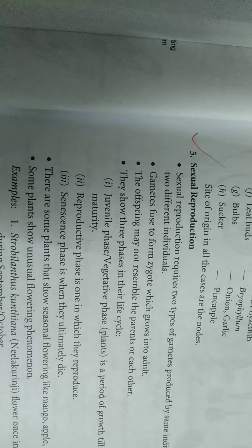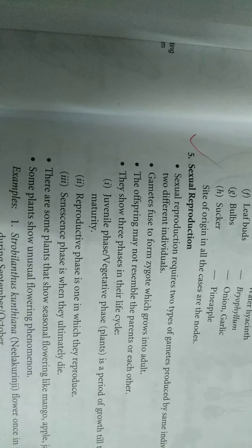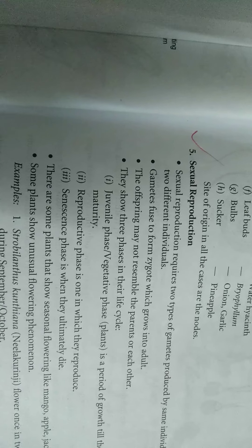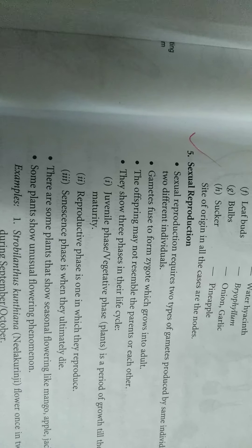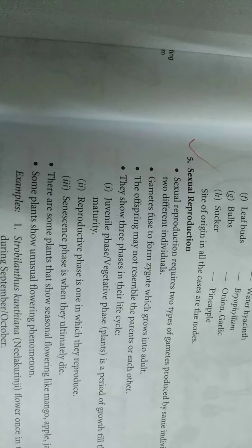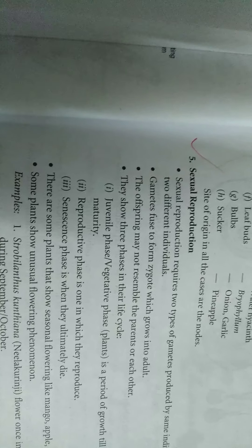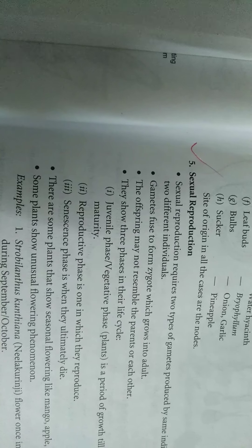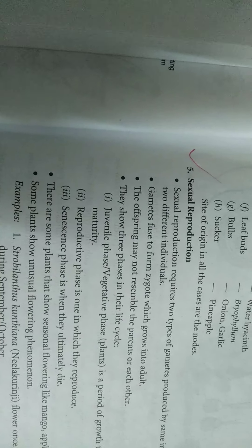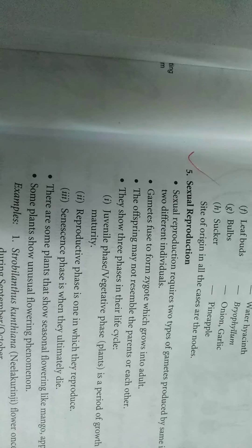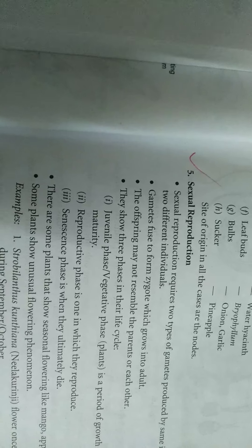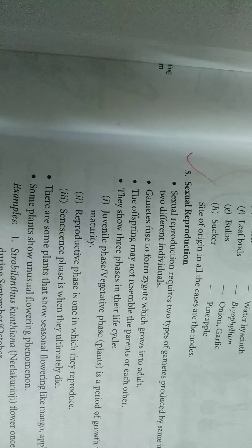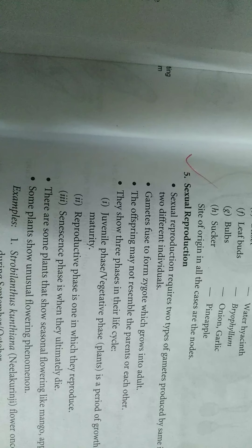Animals are broadly divided into two types of breeders: seasonal breeder and continuous breeder. Seasonal breeders breed at a particular time of the year, e.g. frog, lizard, birds.